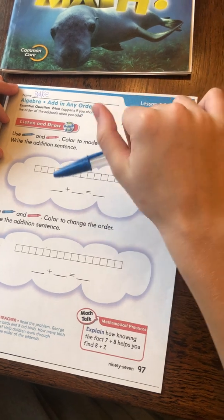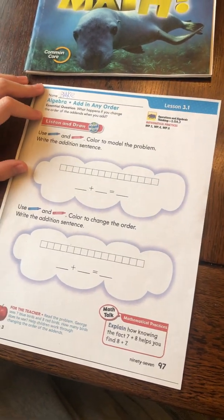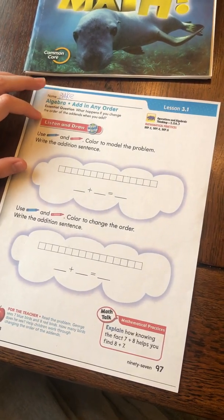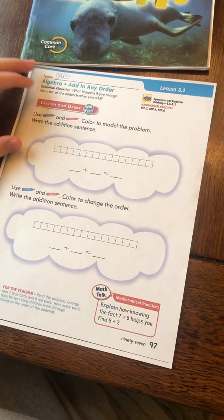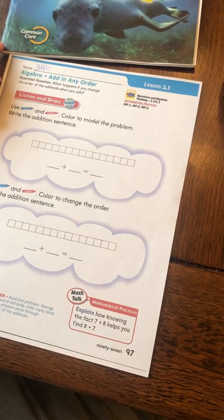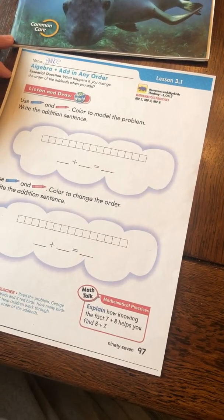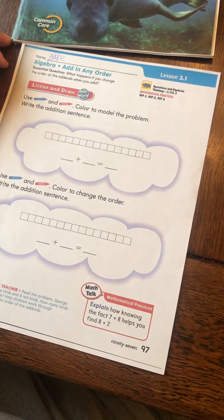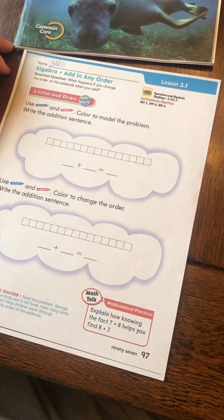So the first thing I did is write my name. And it says, use blue and red, color to model the problem, write the addition sentence. So, the problem is, George sees 7 blue birds and 8 red birds. How many birds does he see?